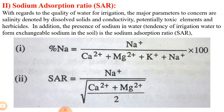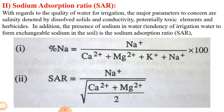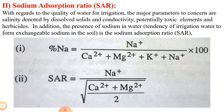The next parameter is sodium absorption ratio (SAR). Regarding water quality for irrigation, the major parameters of concern are salinity — denoted by dissolved solids and conductivity — potentially toxic elements, and herbicides. In addition, the presence of sodium in water and its tendency to form exchangeable sodium in the soil is evaluated using the sodium absorption ratio (SAR), calculated by the following formula.